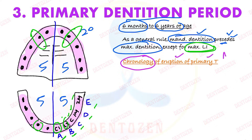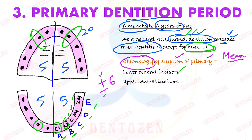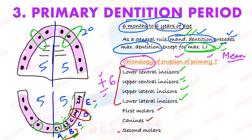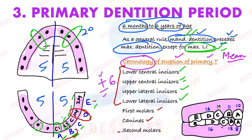The chronology of eruption gives the mean age of eruption with a variation of plus or minus six months, depending on various factors. The first to erupt is the mandibular central incisor, followed by the maxillary central incisor, then maxillary lateral incisor, then mandibular lateral incisor. After the incisors, the first molars erupt, then canines, then second molars. The mandibular central incisors come first at eight months, and maxillary central incisors at ten months.